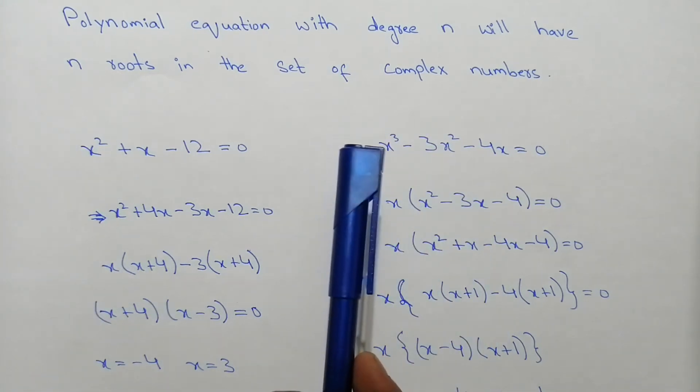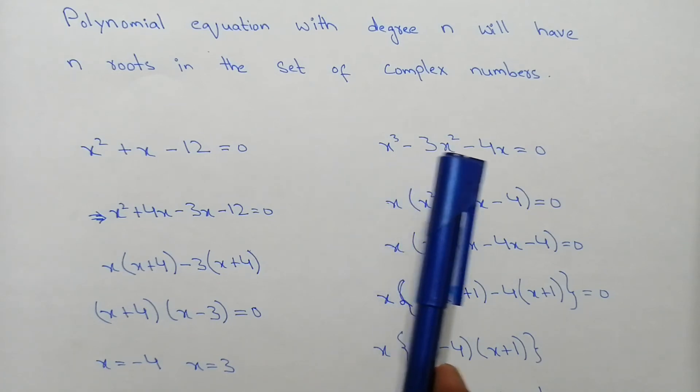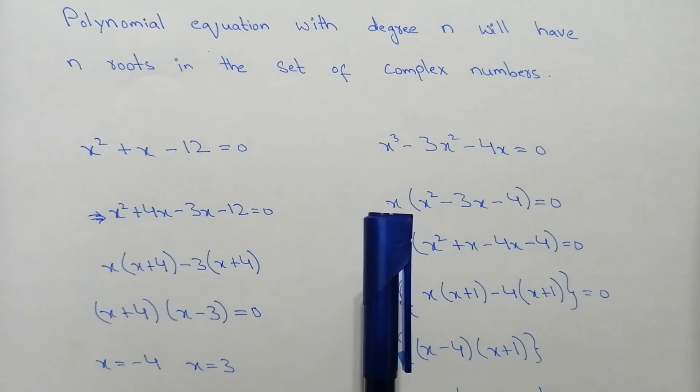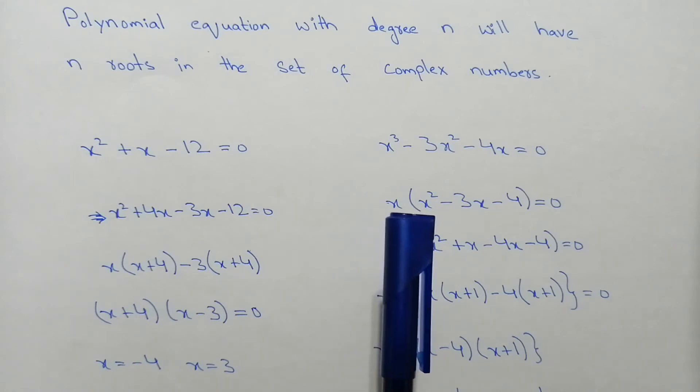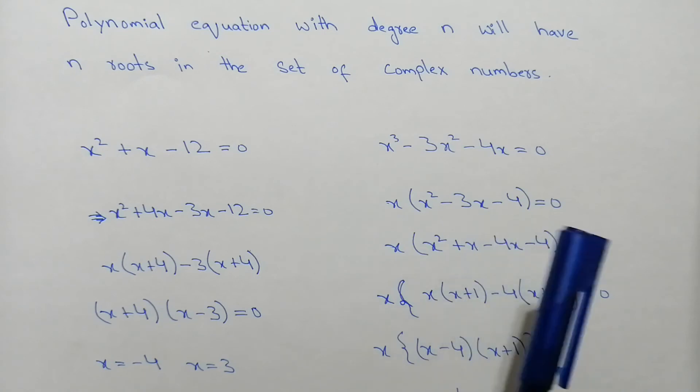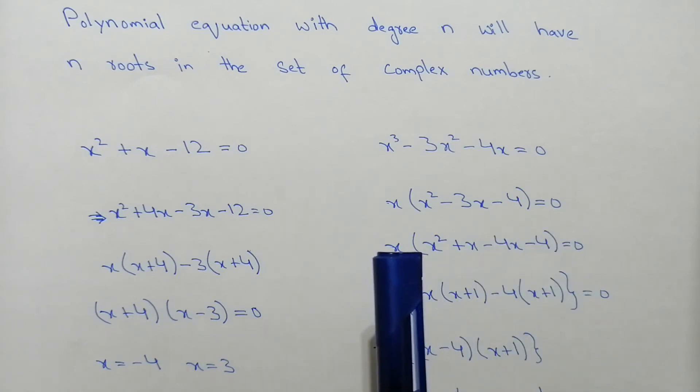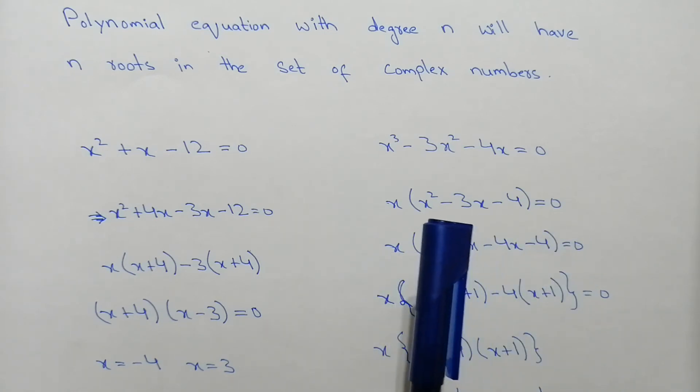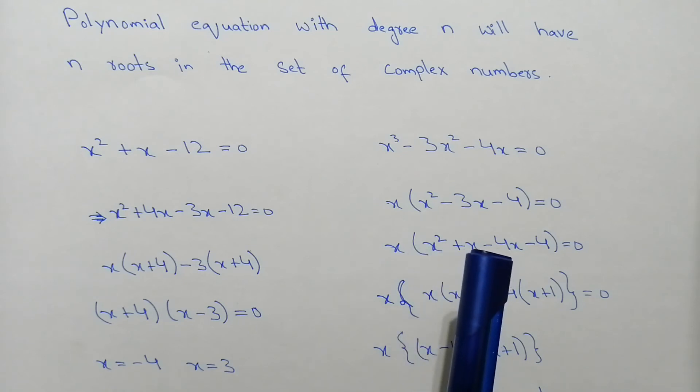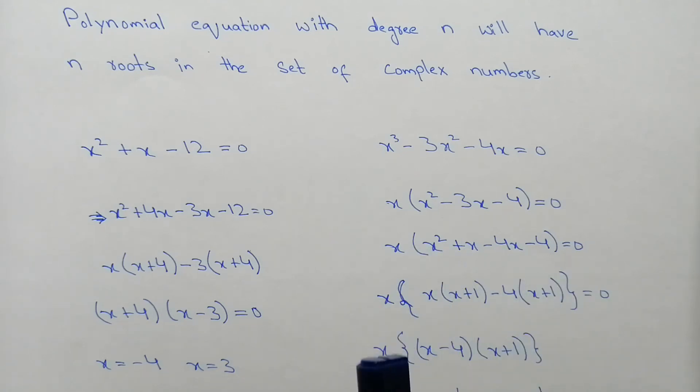Now here we have another equation x power 3 minus 3x square minus 4x is equal to 0. Now taking x common from this equation, so in the bracket we have x square minus 3x minus 4 is equal to 0. Now again doing the factorization, x square plus x minus 4x minus 4 is equal to 0.